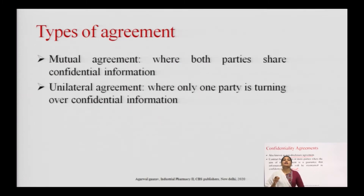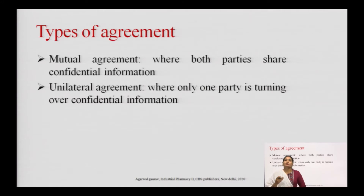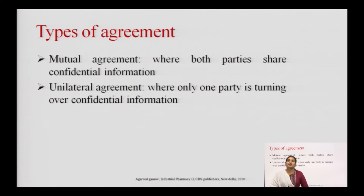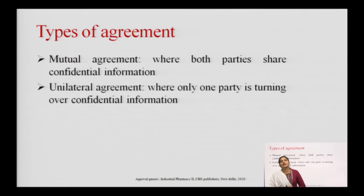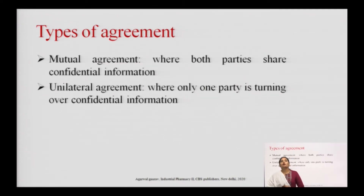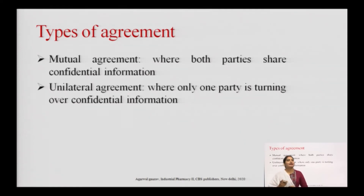This confidentiality agreement can be of two types: mutual agreement or unilateral agreement. In a mutual agreement, both parties share confidential information. In the case of a unilateral agreement, only one party is turning over the confidential information.